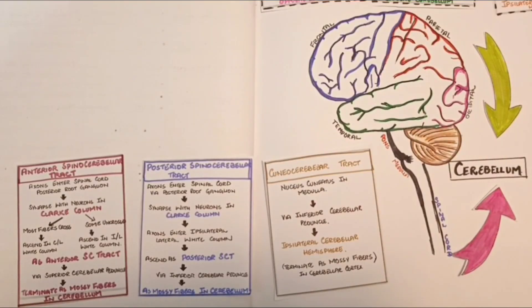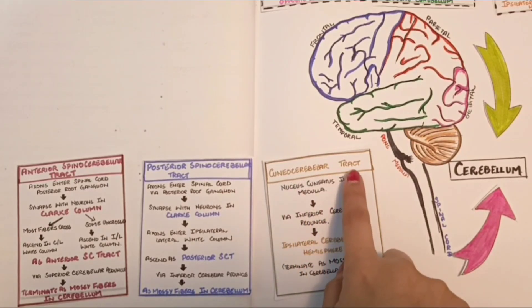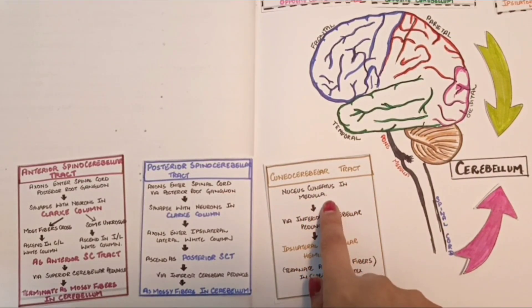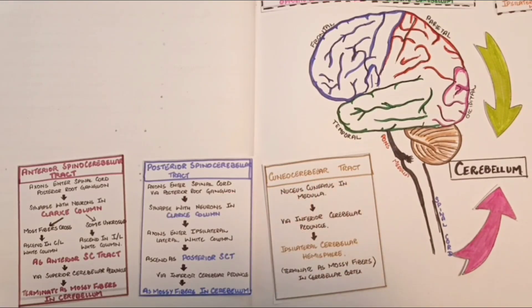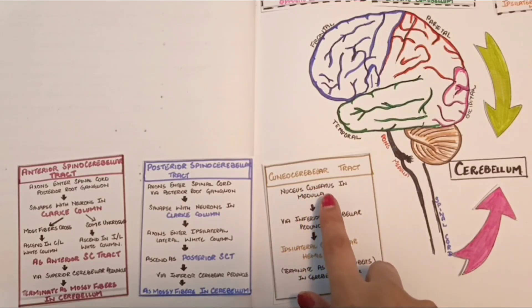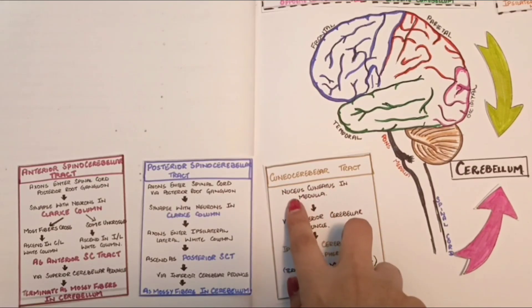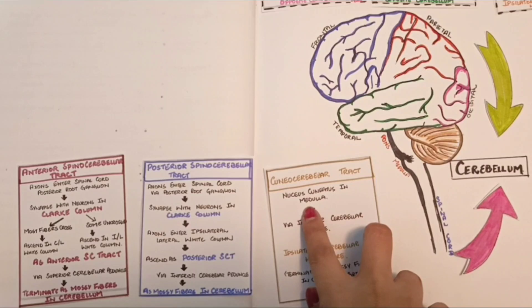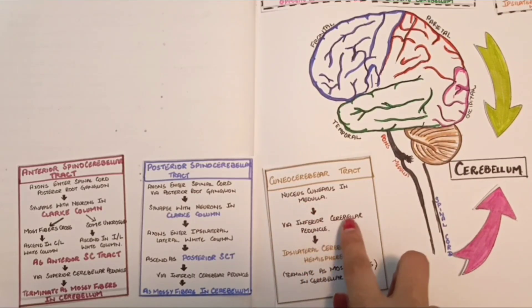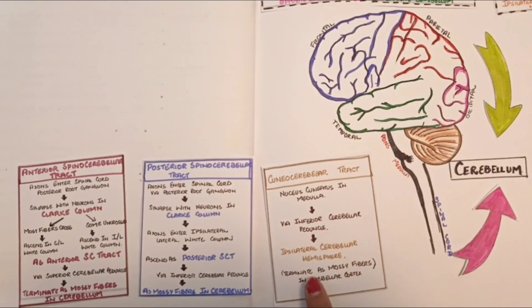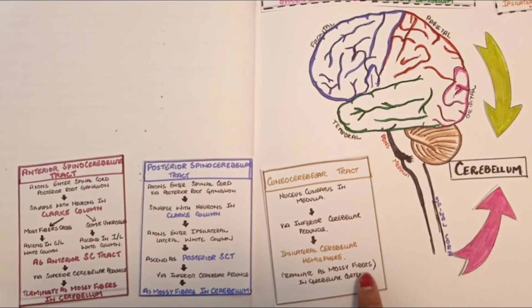The third afferent pathway from the spinal cord involves the cuneocerebellar tract, which conveys information from muscles and joints of the upper limb and upper thorax. These fibers are part of the fasciculus gracilis and fasciculus cuneatus pathway. Starting from the nucleus cuneatus in the medulla, these fibers enter the ipsilateral cerebellar hemisphere via the inferior cerebellar peduncle and terminate as mossy fibers in the cerebellar cortex.